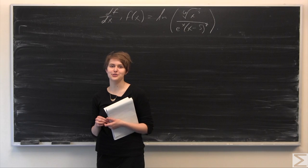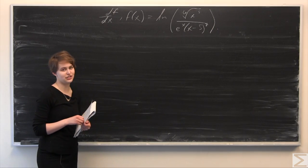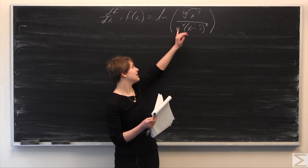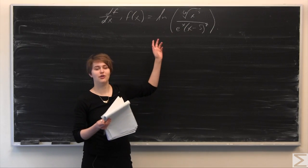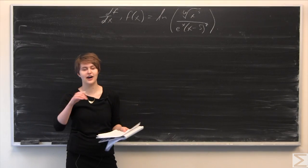This week's problem of the week asks you to find the derivative df/dx given a function f(x), where f(x) is equal to ln of quantity—in the numerator we have the sixth root of x to the fifth, all over e to the x times x minus 5 to the seventh.